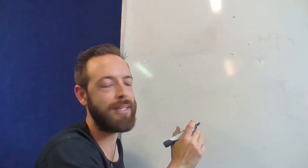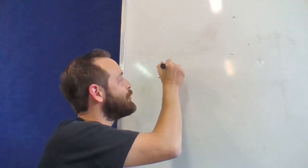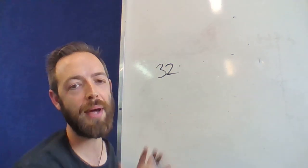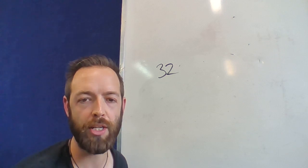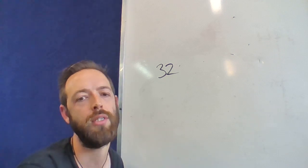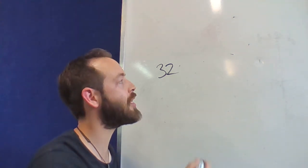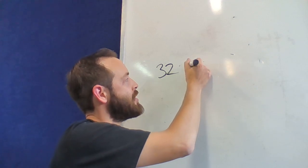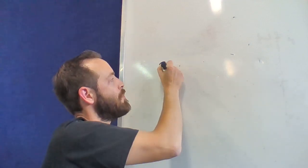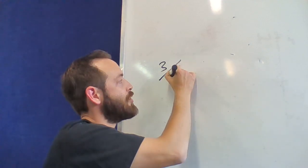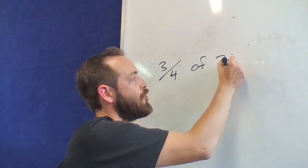So we're finding fractions of a set, and if we have a number like 32, you may have already been able to find a unit fraction, you know, one quarter or one eighth, or one of those things, but now it's what is a non-unit fraction, three quarters of 32.